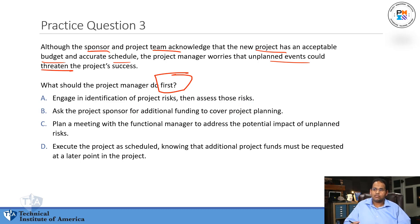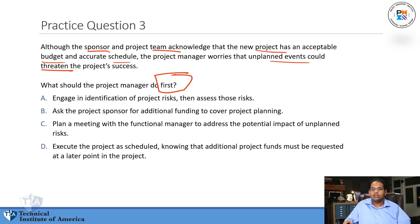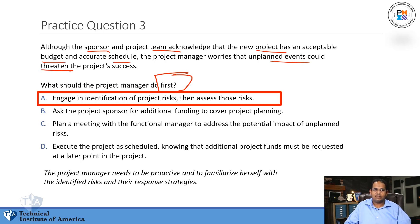A: Engage in the identification of project risks and then assess those risks. B: Ask the project sponsor for additional funding to cover project planning. C: Plan a meeting with the functional manager to address the potential impact of unplanned risks. D: Execute the project as scheduled, knowing the additional project funds must be requested at a later point. The answer is A.